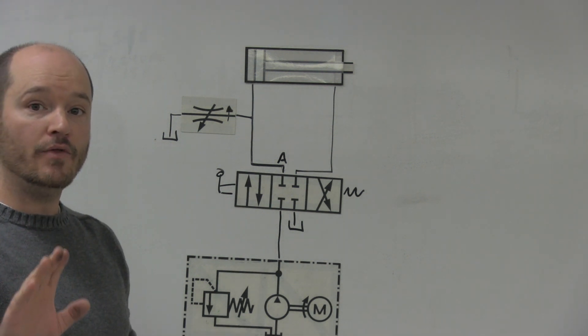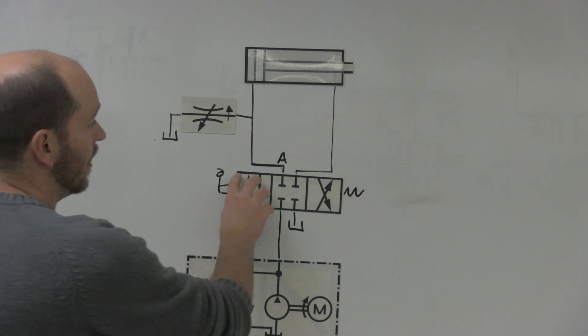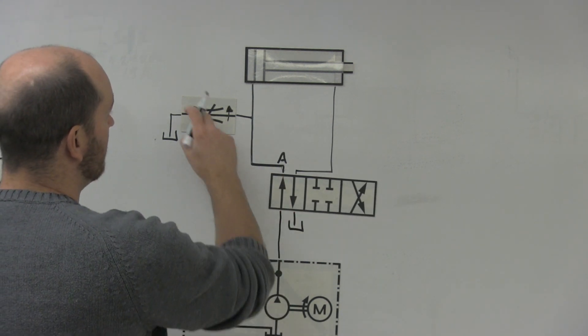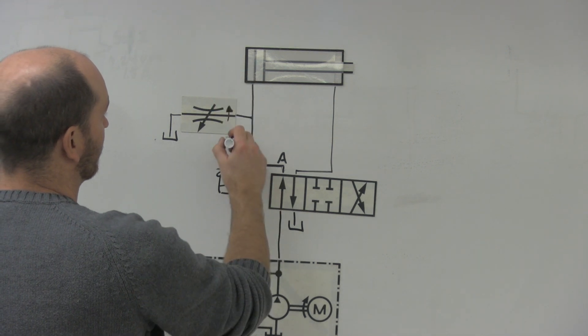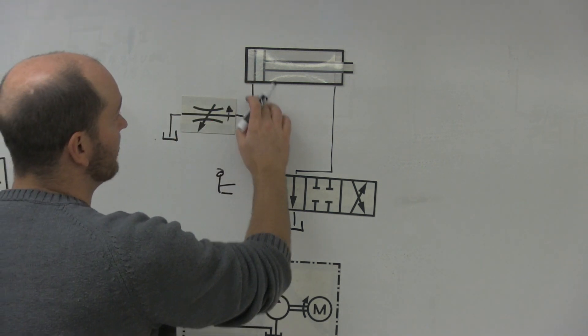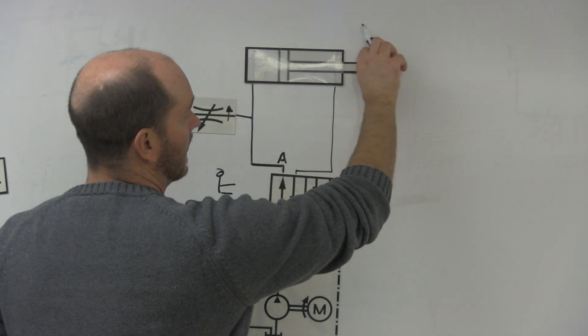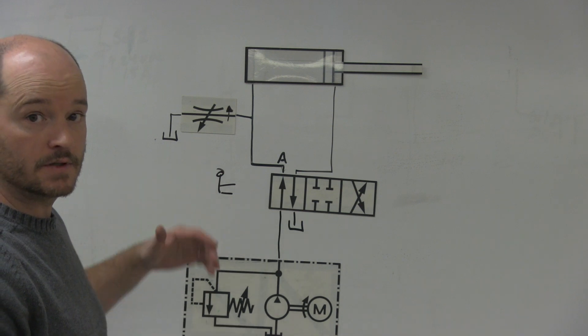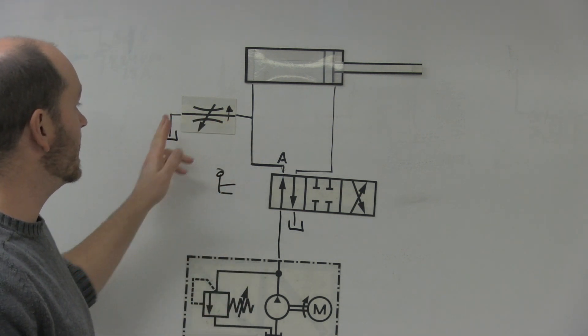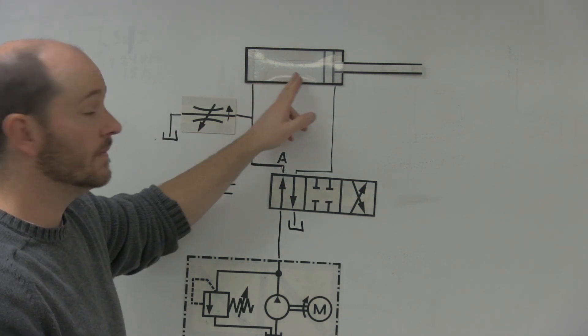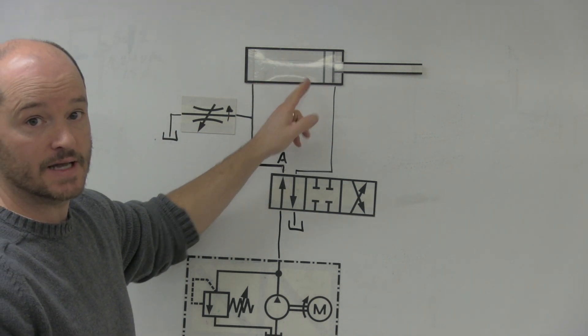How this works is when I shift to this position, oil will come up. A set amount of oil will flow through here to tank. The rest of it will come to here and extend this out. The reason this works to slow the cylinder down is part of the flow is diverted back to tank, where the rest of it is going to the cylinder to extend it out.